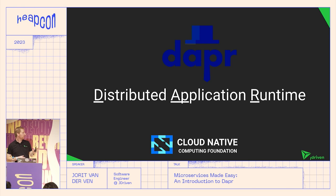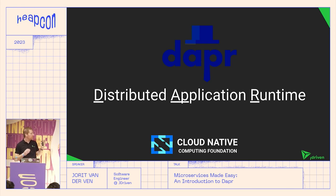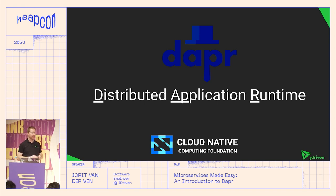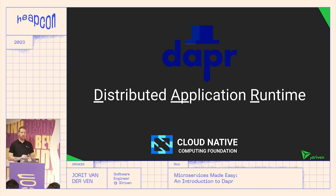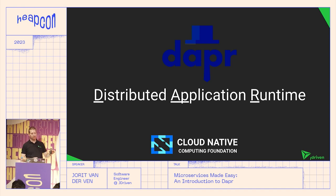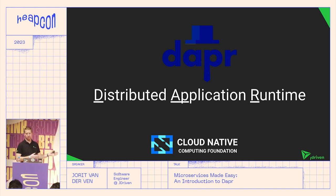Dapr stands for Distributed Application Runtime and promises to make it easier to write microservices. Dapr was originally built by Microsoft — and as a Java developer, the fact that I'm talking about a Microsoft thing is kind of interesting. It was first released in 2019 and the first stable release was in 2021. Nowadays it's part of the Cloud Native Computing Foundation, which is part of the Linux Foundation, and they support open source projects financially and with developers.